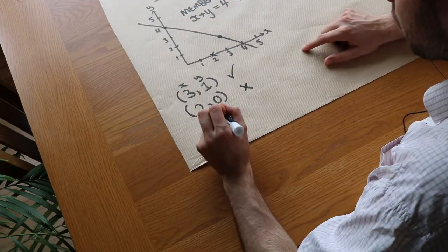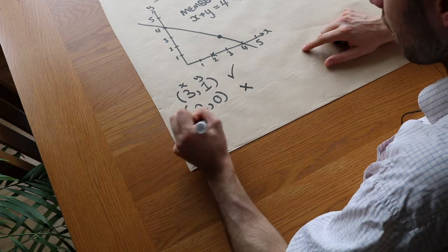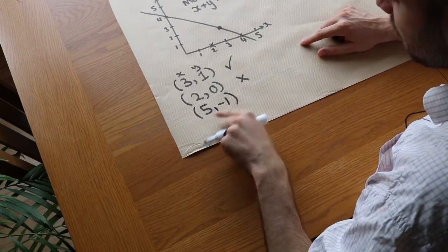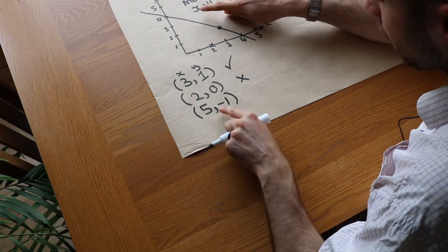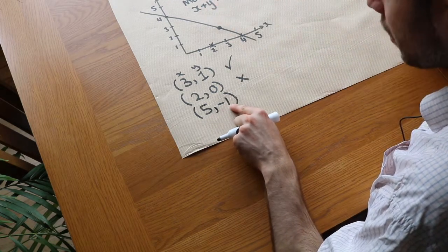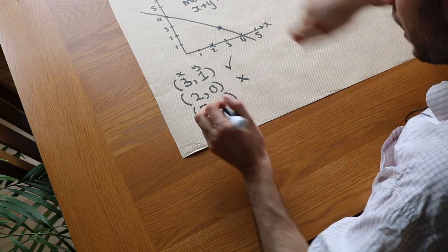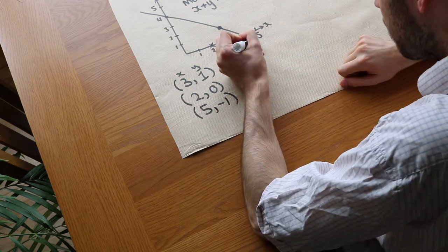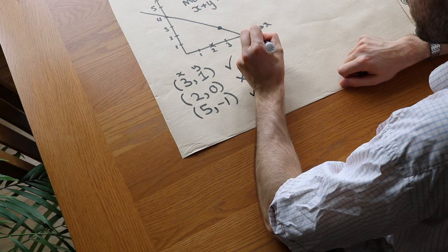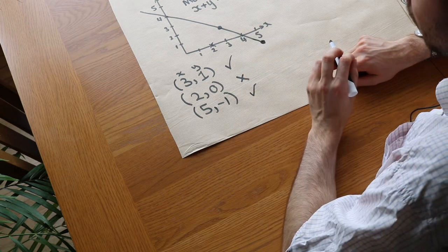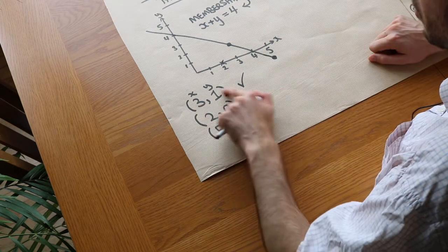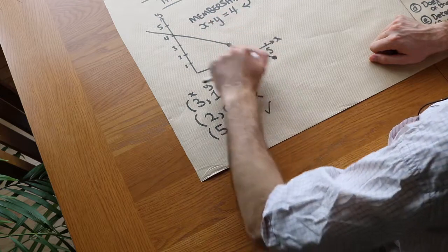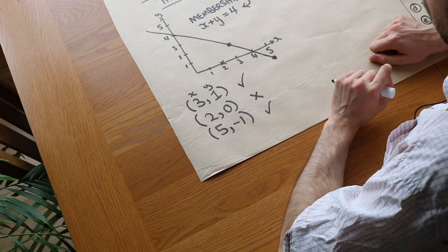We might have a negative value involved. If we had say 5, −1: does that obey the membership rule? The x value of 5 plus −1: 5 plus negative 1 is 4. Yes, it does obey the membership rule. In fact we're going to have to extend this line a bit because 5, −1 is about here and it will be on the line. If the coordinates of a point obey this membership rule then it's on the line, otherwise it's not.